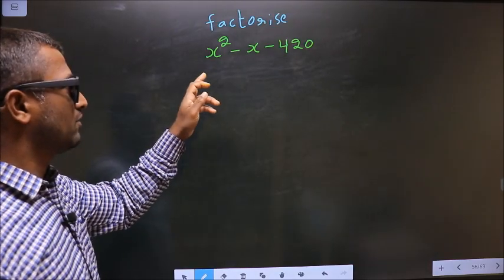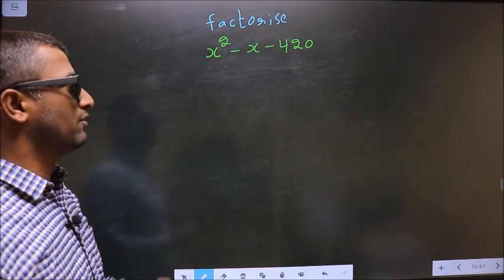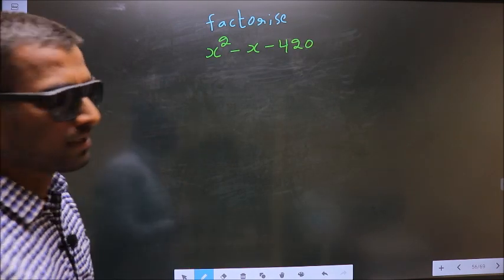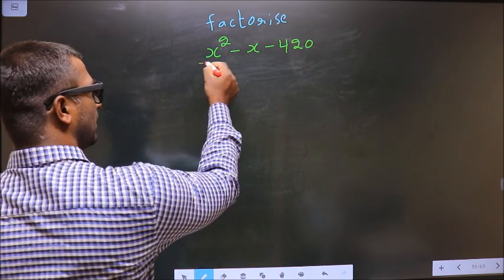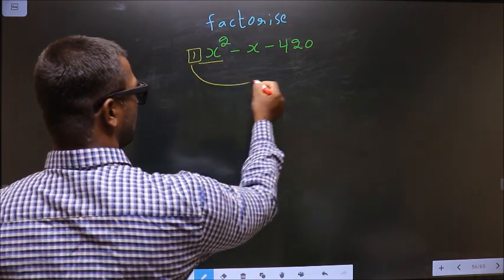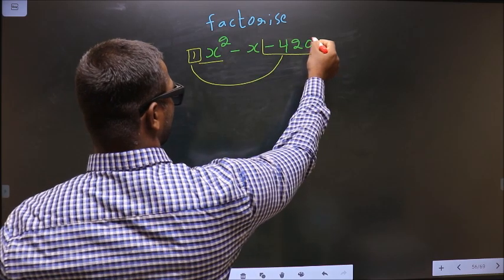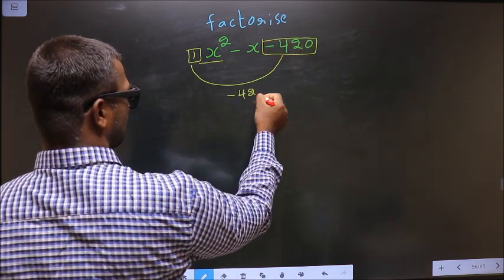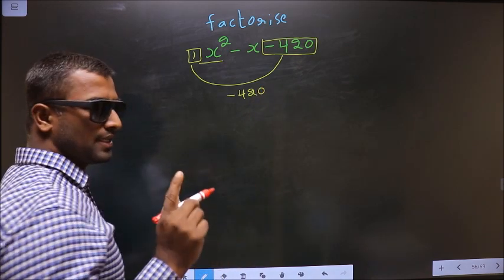Factorize x² - x - 420. To factorize, step 1: coefficient of x² which is 1 here should be multiplied to the constant, that is -420. So we get -420. This is your step 1.